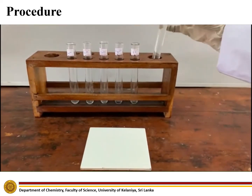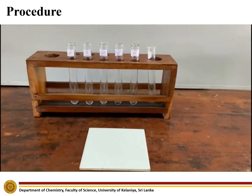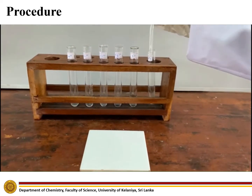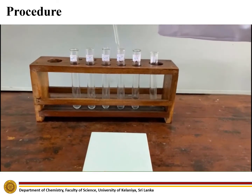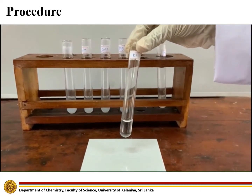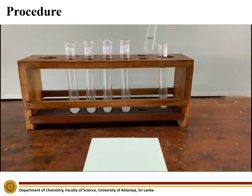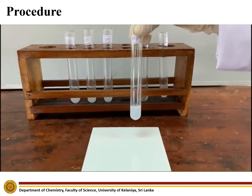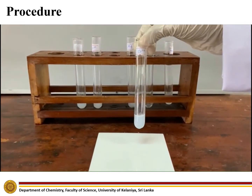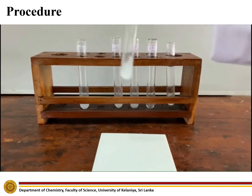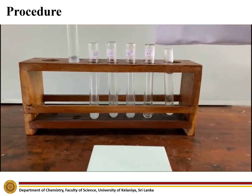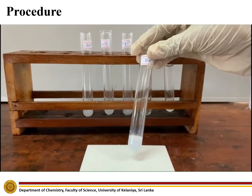Add sodium phosphate to the given cation solutions. It dissolves well in potassium ion solution. A white precipitate forms in calcium ion solution, strontium ion solution, and barium ion solution.